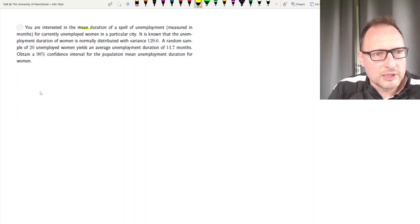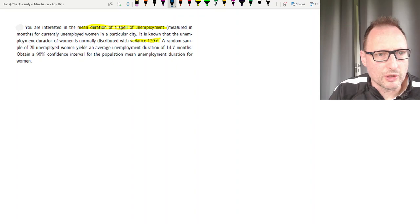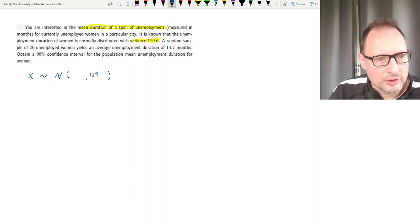We're interested in the mean duration of an unemployment spell of unemployed women in a particular city. We measure that in terms of months. It is known that the unemployment duration of women is normally distributed with variance 129.6. So that's a bit of important information. Let's call that variable X. And the information tells us we know this is normally distributed and it has a variance of 129.6.